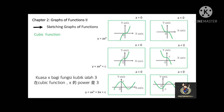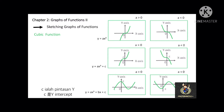Let's see some graphs of cubic functions. The highest power of x for a cubic function is 3. For example, y = ax³, y = ax³ + c, and y = ax³ + bx + c. When a is greater than 0, the cubic curve will end in a going-up position. On the other hand, when a is less than 0, the cubic curve will end in a going-down position, and c is the y-intercept.